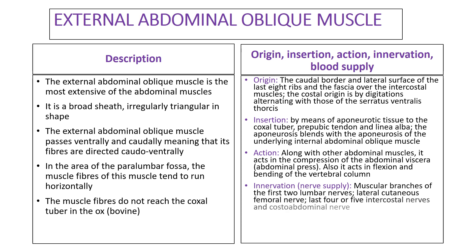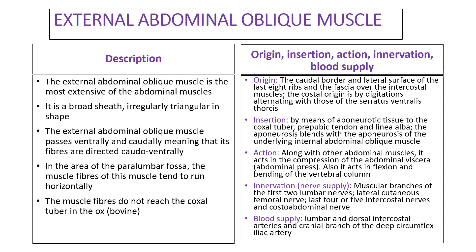The nerve supply for this muscle is from the muscular branches of the first two lumbar nerves, also from the lateral cutaneous femoral nerve, and the last four or five intercostal nerves and the costal abdominal nerve. The arterial blood supply is from the lumbar and dorsal intercostal arteries, and also from the cranial branch of the deep circumflex iliac artery.